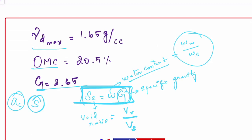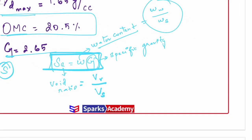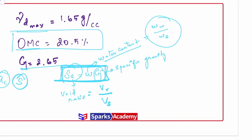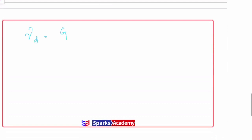Since we know the optimum moisture content, that is our w value to substitute into Se = wG. We still need to find the void ratio e. Luckily we have the formula: γd = G·γw / (1 + e), where γd is the dry density and γw is the unit weight of water.